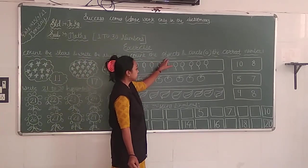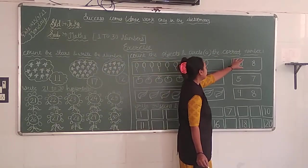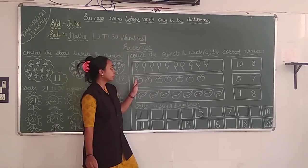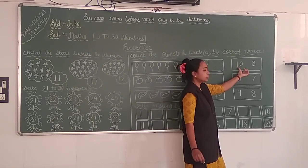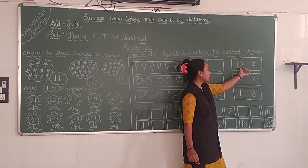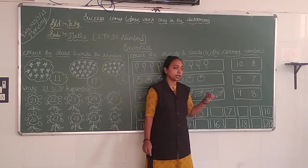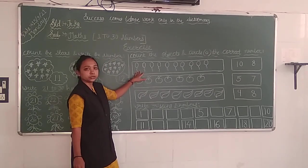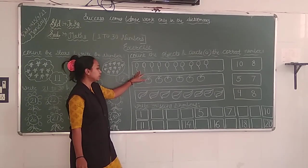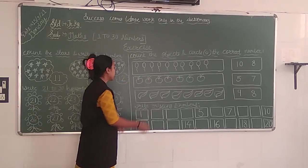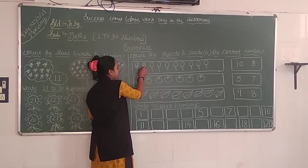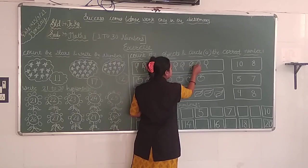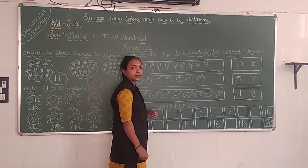Count the objects and circle the correct number. We will count the objects. We will look at the object and count it. Okay, first we can start with this: 1, 2, 3, 4, 5, 6, 7, 8, 9 and 10. This is 10.